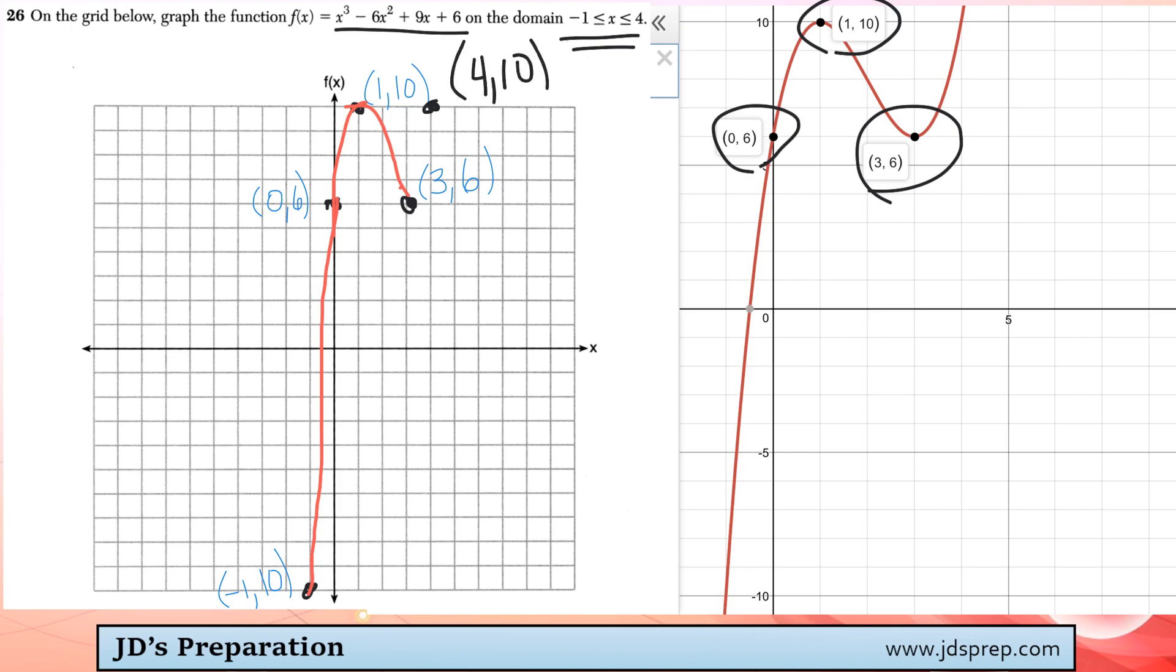So when we're connecting here, it's actually going to do a steep increase up to there. I'm not going to draw arrows at either end of this graph, because we do need to remember that we're dealing with a domain from negative 1 to positive 4.